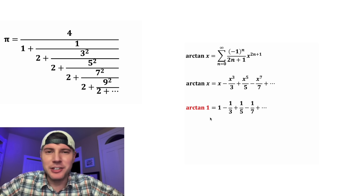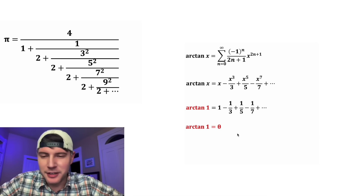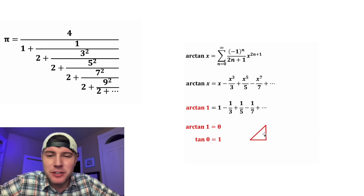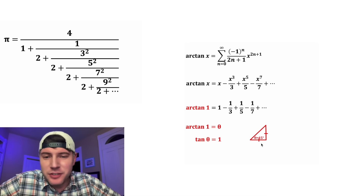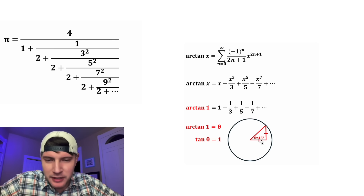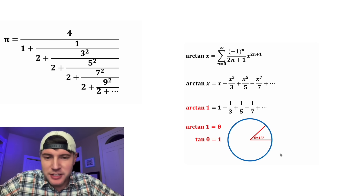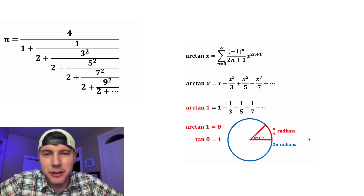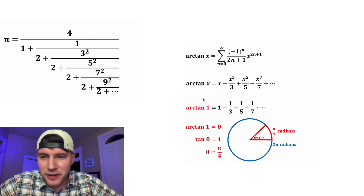Now let's evaluate arctan of 1. Arctan of 1 is equal to some angle theta — it's the angle such that tangent of theta equals 1. Tangent is the ratio of opposite over adjacent, and since it equals 1, the opposite and adjacent have to be equal to each other, which occurs when the angle is 45 degrees. We want to express this in radians, so we draw a circle around our triangle. For the entire circle, it's equal to 2 pi radians. This red portion connected to our 45-degree angle is 1 eighth of the entire circle, or pi over 4 radians. So pi over 4 is our theta, and this is the value of arctan of 1.